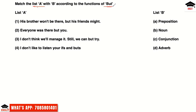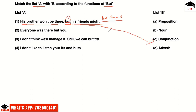The first question is: match List A with List B according to the function of 'but'. 'But' can have different functions. First entry: 'His brother won't be there, but his friends might be there.' Here 'but' joins two independent clauses — it is a coordinating conjunction. 'For', 'so', 'yet' — these coordinating conjunctions always form compound sentences.